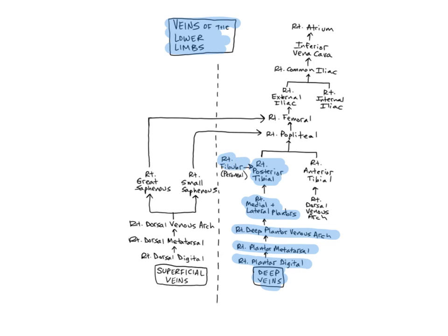The fibular or peroneal veins drain blood from the lateral compartment of the leg, where the fibularis or peroneus muscles are located, and empty into the posterior tibial veins.